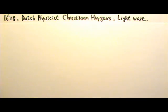Dutch physicist Christian Huygens proposed in 1678 that light is a wave rather than a stream of particles. Of course, that was way before electromagnetic theories were developed, and at that time people did not really take notice of Huygens' light wave theory. However, his theory was later vindicated and has remained useful today.